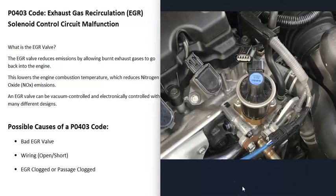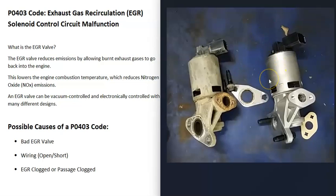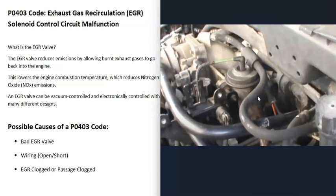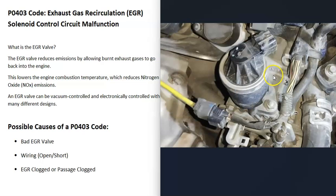What are some possible causes of a P0403 code? The first thing that could cause this is that the EGR valve has just gone bad and needs to be replaced. The computer controls it to regulate how much exhaust gas goes back into the cylinders. There are different types of EGRs — older vehicles were vacuum controlled, but most EGR valves now are electronically controlled by the computer. It's a good idea to get a diagram for your specific vehicle, but keep in mind different types of EGR valves do the same thing.